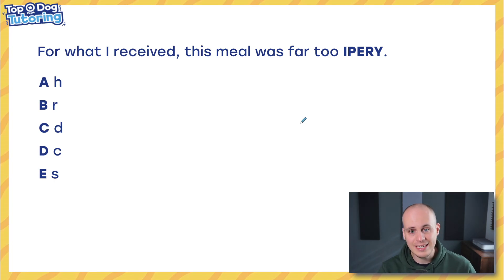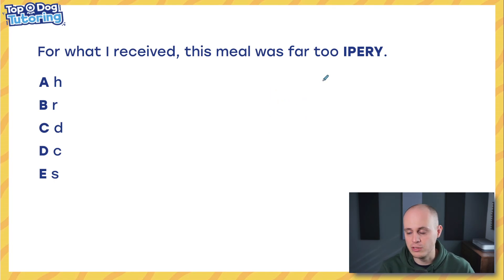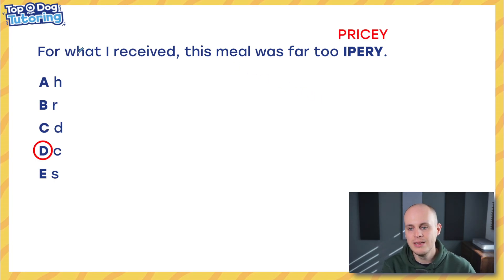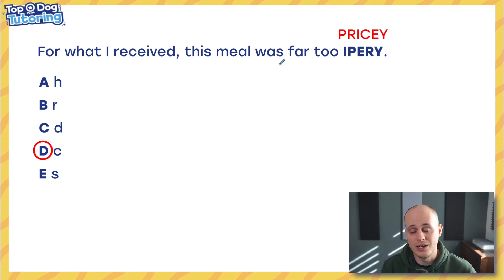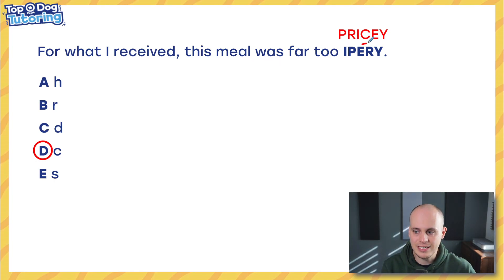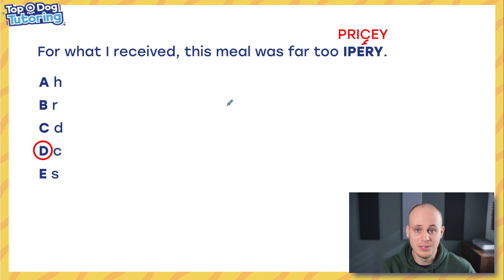So yesterday, day 29, Dylan left you with this one. It was a really cool anagram question where one letter is missing from the anagram. The sentence says: for what I received, this meal was far too pricey. We were missing the C from pricey when we unscrambled that anagram, which is why C is the answer.